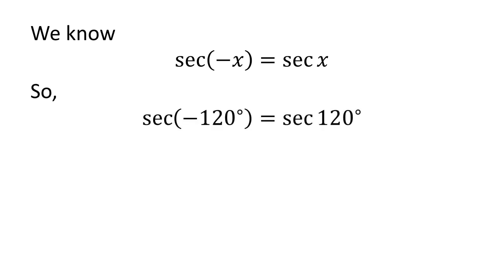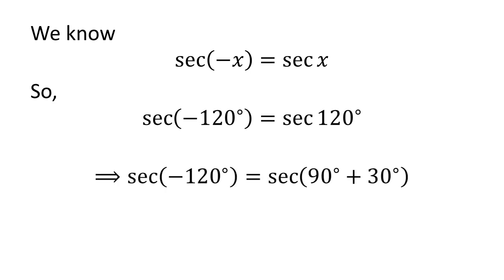Let us apply the above identity for secant of minus 120 degrees. Here, x is 120 degrees. So secant of minus 120 degrees is equal to secant of 120 degrees. As 120 degrees is equal to 90 degrees plus 30 degrees, secant of minus 120 degrees is equal to secant of 90 degrees plus 30 degrees.